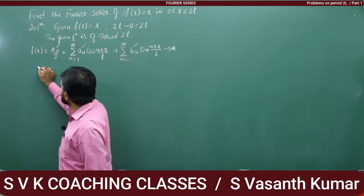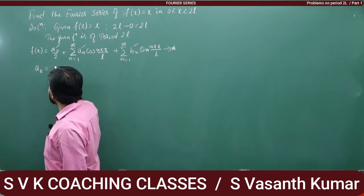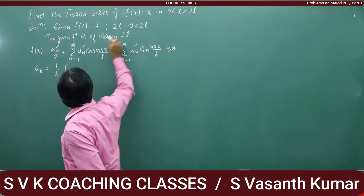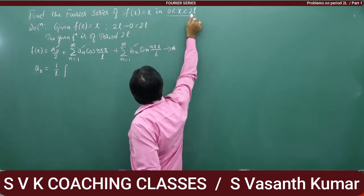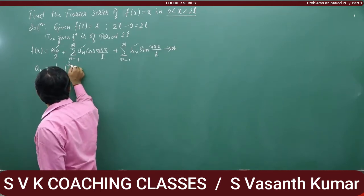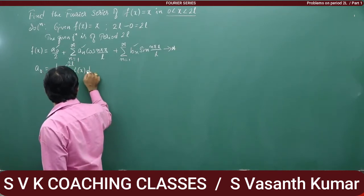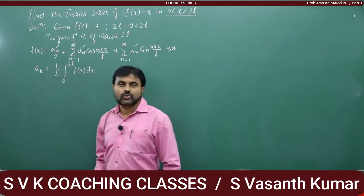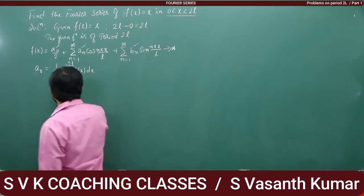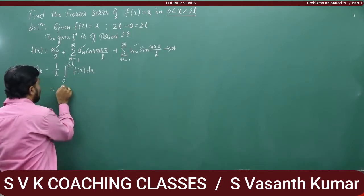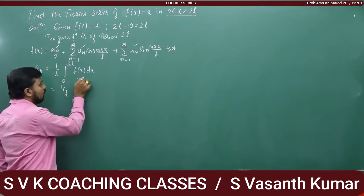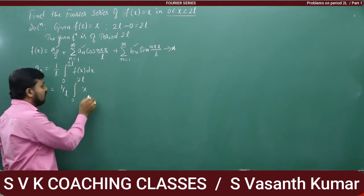What is a₀? a₀ is nothing but (1/L) integral from 0 to 2L of f(x) dx. The limit here is 0 to 2L. What is f(x) given? It is x. So it is (1/L) integral from 0 to 2L of x dx.